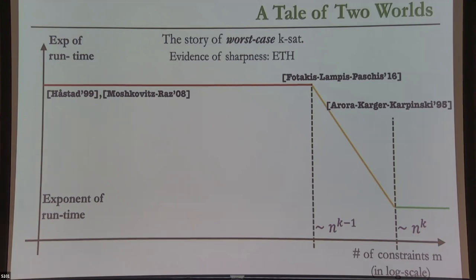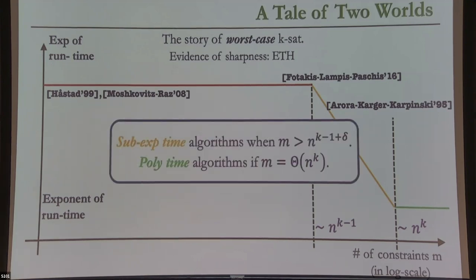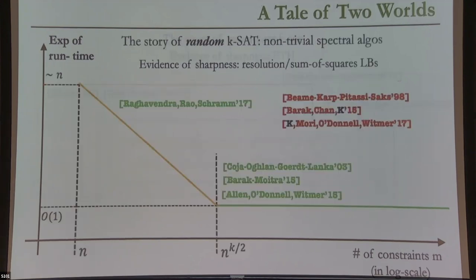The key thing to remember from that slide is that the two transitions happen at N^{K-1} and N^K. Now here's a similar curve but for random KSAT — I'll call it fully random KSAT to disambiguate from other models I'll discuss. In the random KSAT model, each clause is generated by choosing a uniformly random K-tuple of variables and then uniformly randomly negating each chosen variable to create a literal, repeated M times. This is the maximum possible randomness in an M-clause formula.